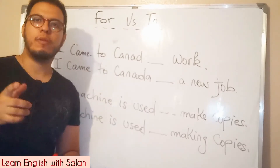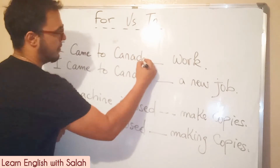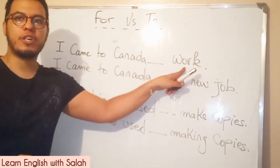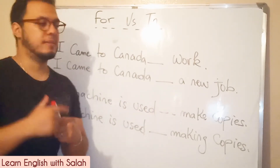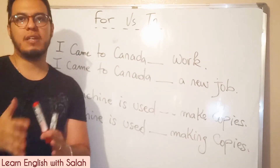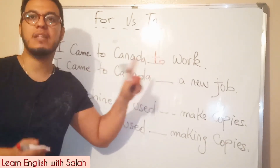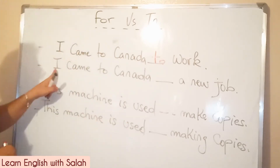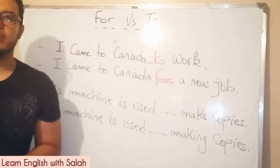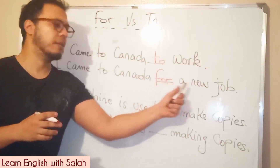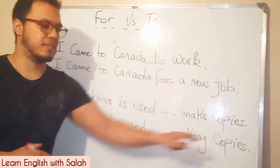Now let's move to a small practice. 'I came to Canada __ work' — always remember that we put 'to' before a bare infinitive or a verb. So: I came to Canada to work, not 'for work.' 'I came to Canada __ a new job' — here we say 'for a new job.' So 'to' is placed before a verb and 'for' before a noun.